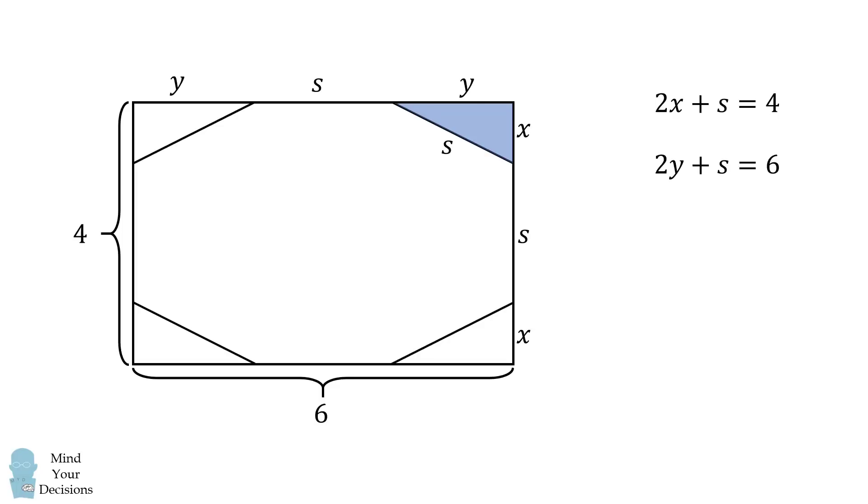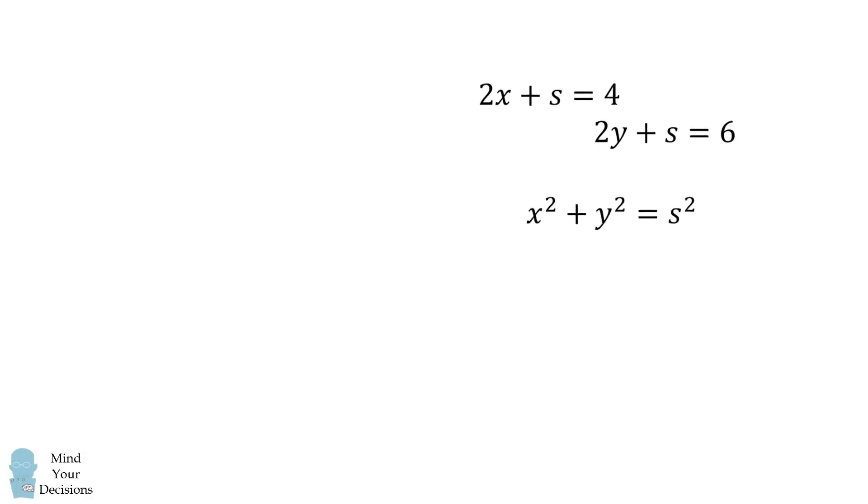Now consider this corner of the rectangle. It's a right triangle, and therefore X squared plus Y squared is equal to S squared. We thus have a system of three equations.